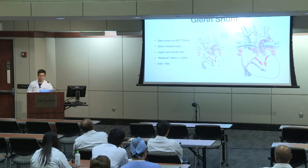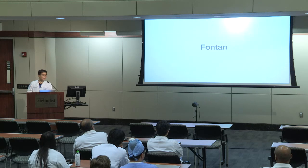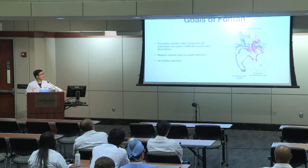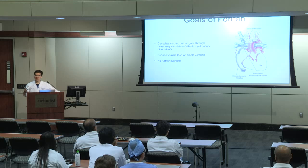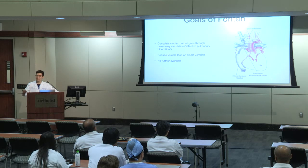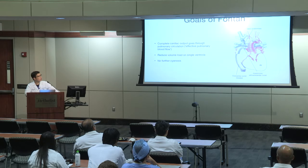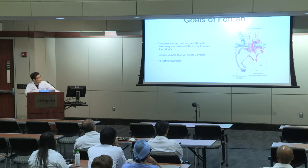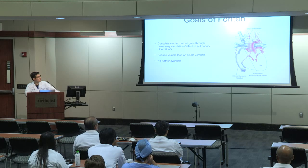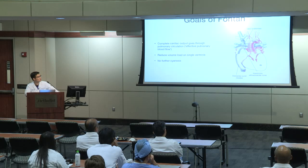By toddlerhood, we want to get these kids so they're not blue all the time — that's what the Fontan is. We call it Fontan completion because it's the destination we're trying to get to. We take the complete cardiac output and send it through the pulmonary circulation — effective pulmonary blood flow. We attach an extracardiac conduit, typically a Gore-Tex conduit about 20-22 millimeters in diameter, connecting the IVC directly to the Glenn circuit at the underside of the pulmonary arteries. Now there's no more right-to-left shunting — blue is blue, red is red.